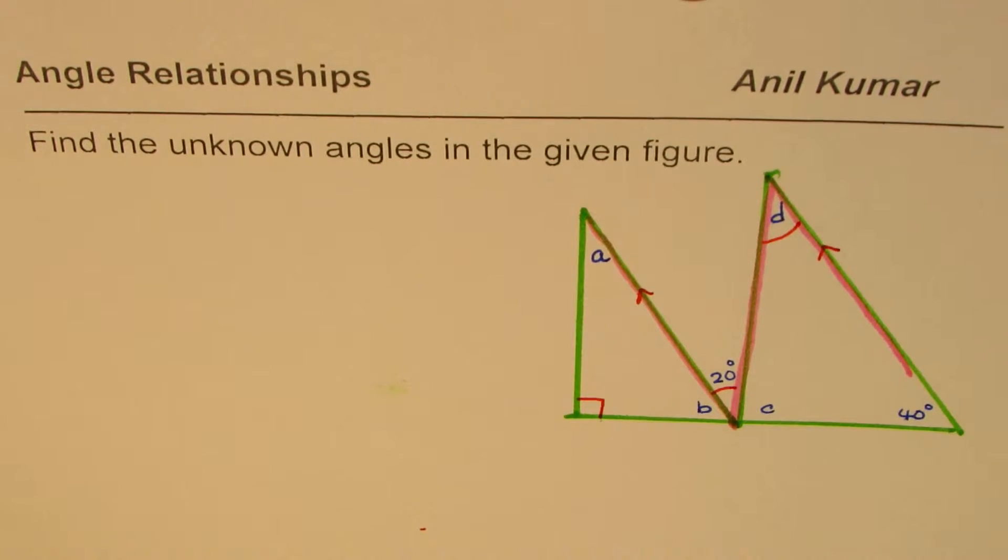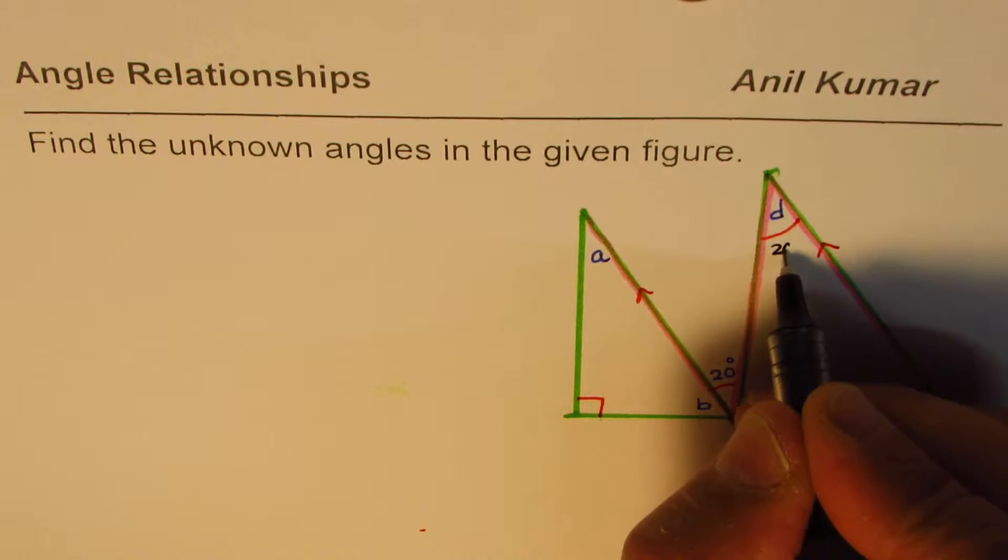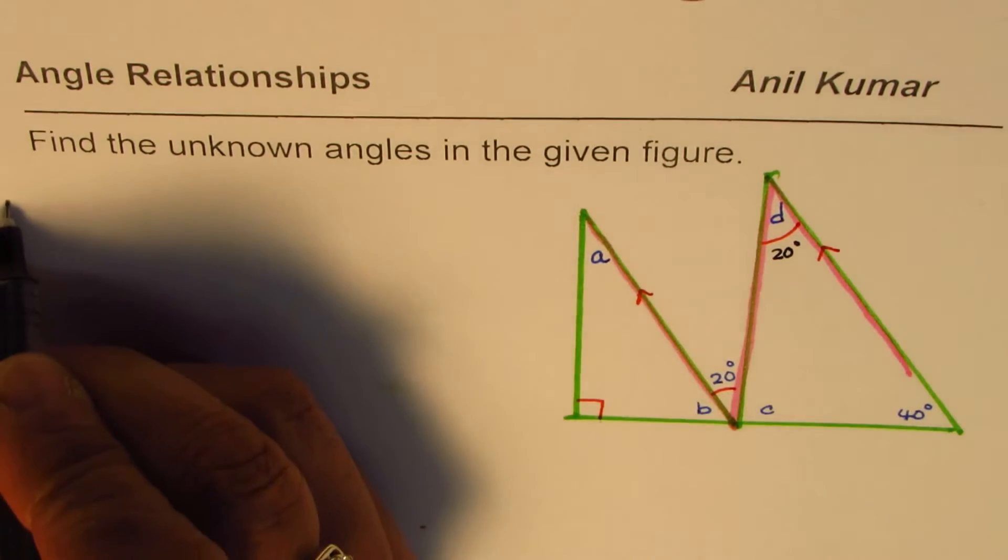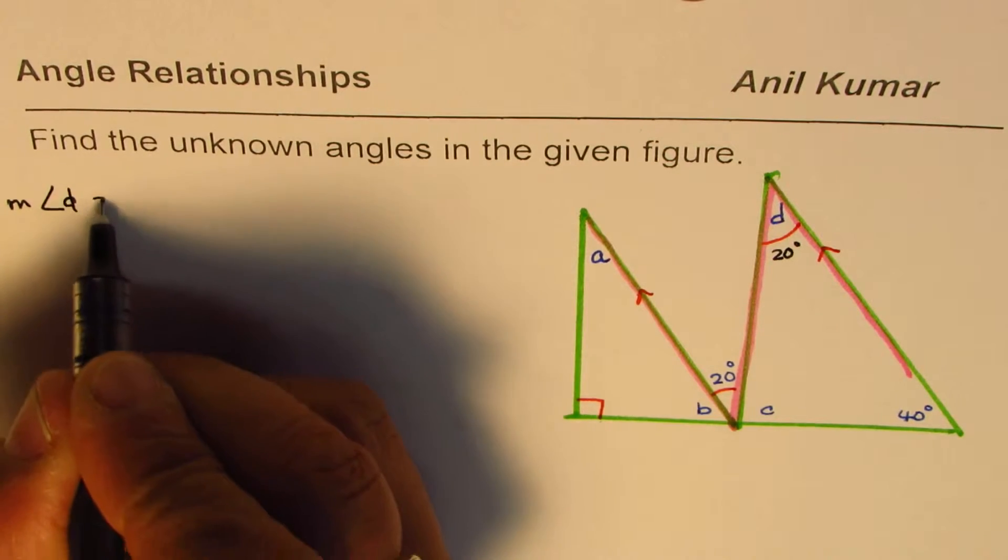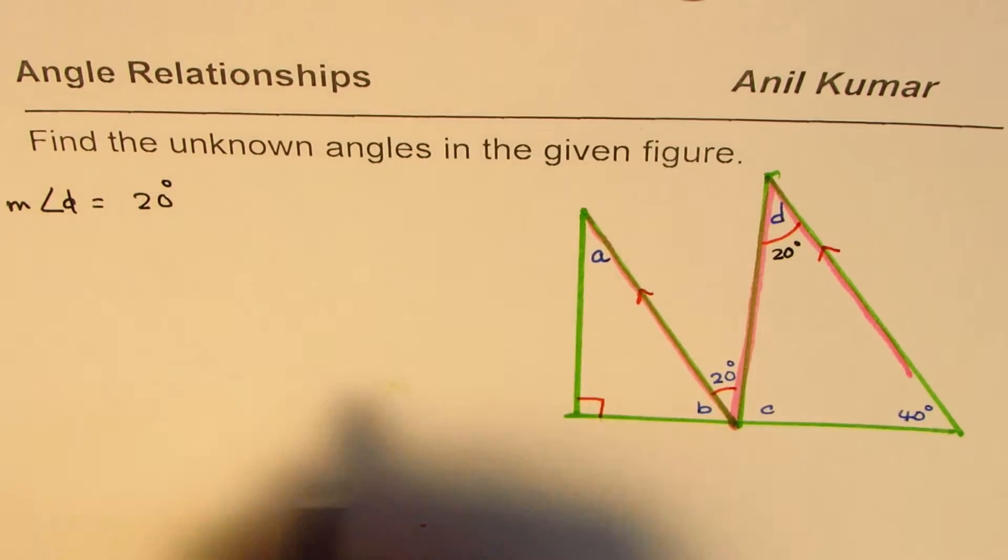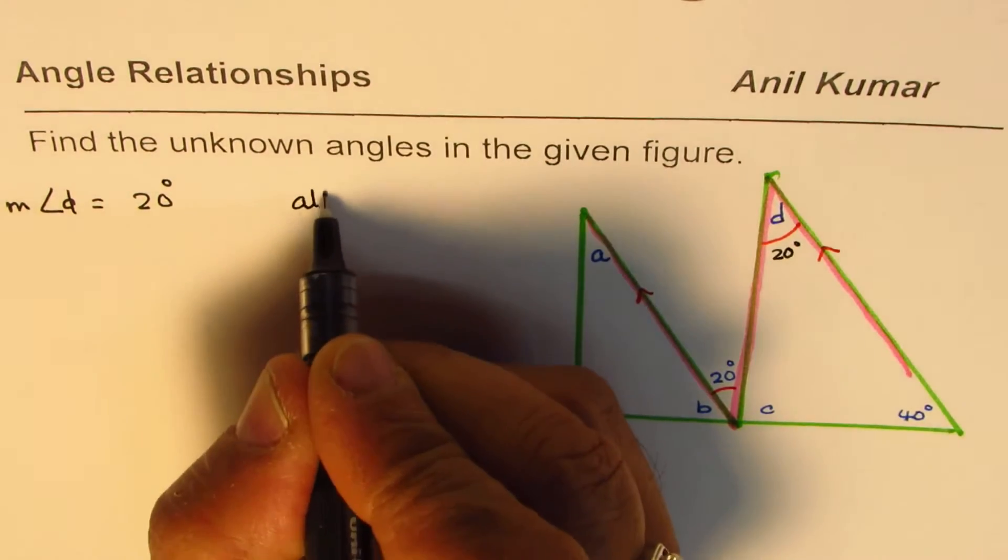Therefore, we can write that angle D equals 20 degrees. So the measurement of angle D equals 20 degrees, which are alternate angles.